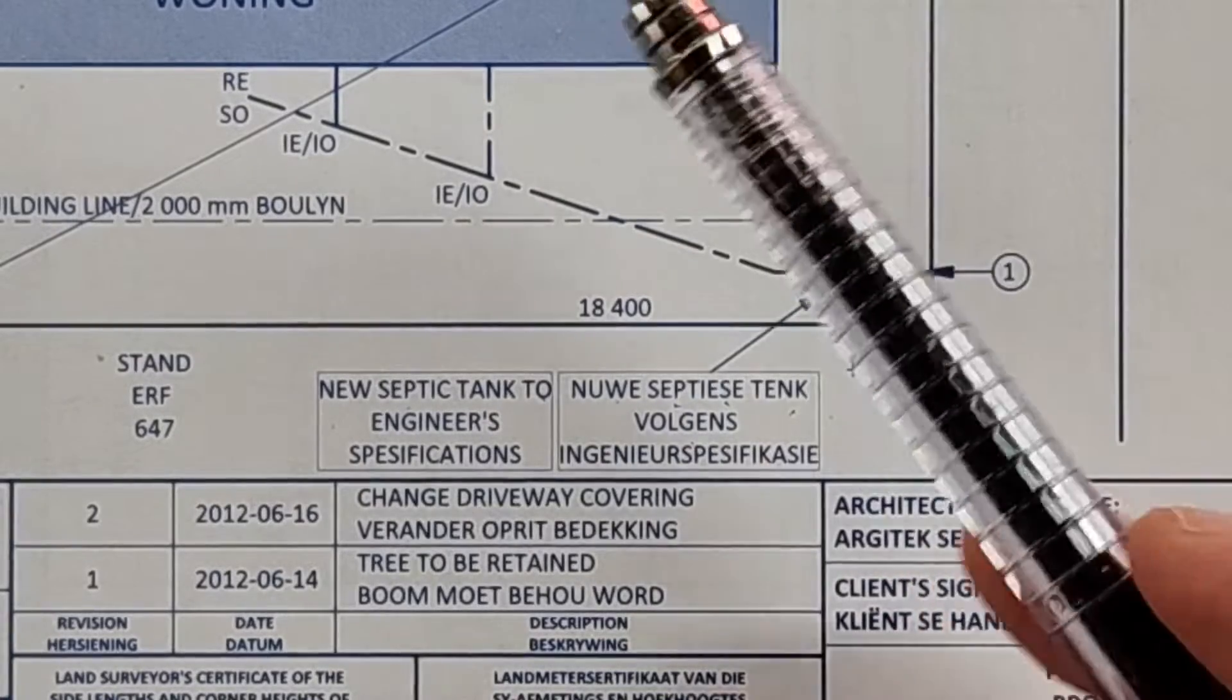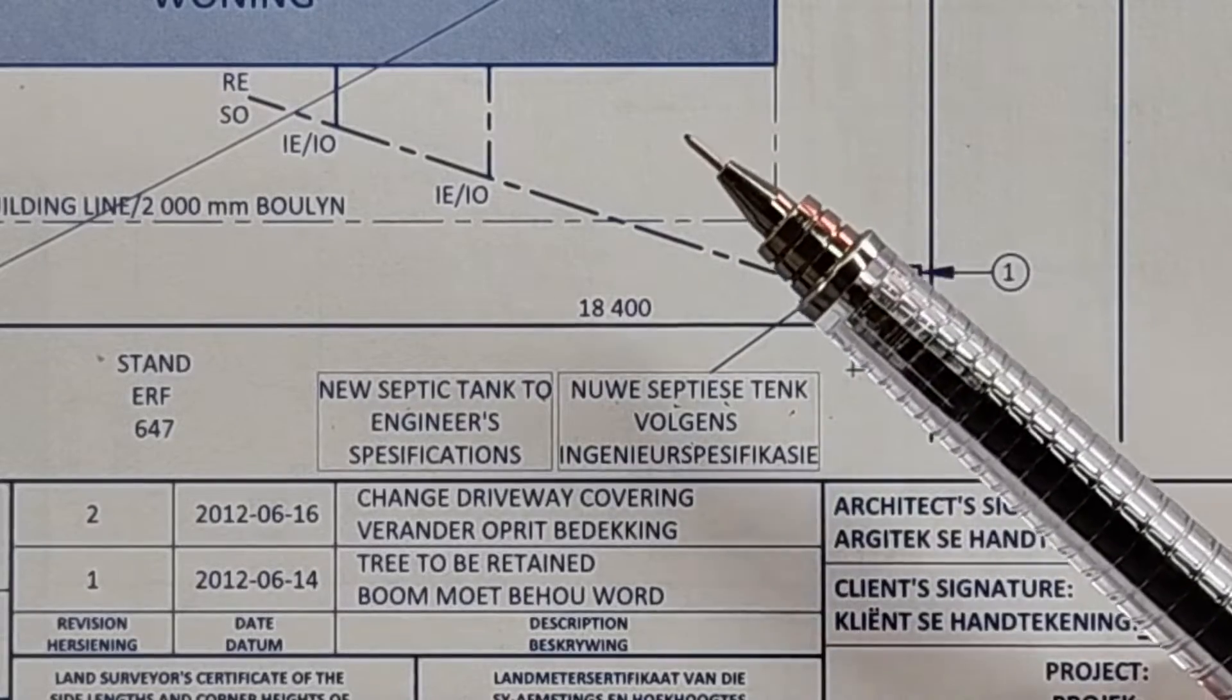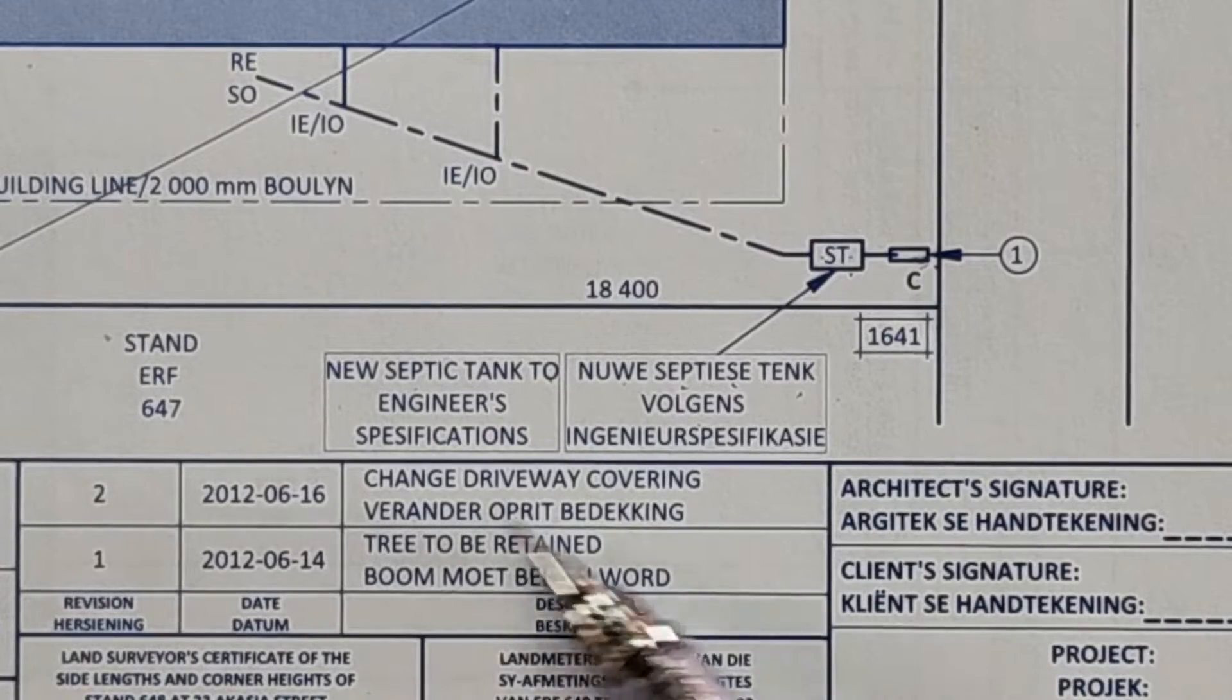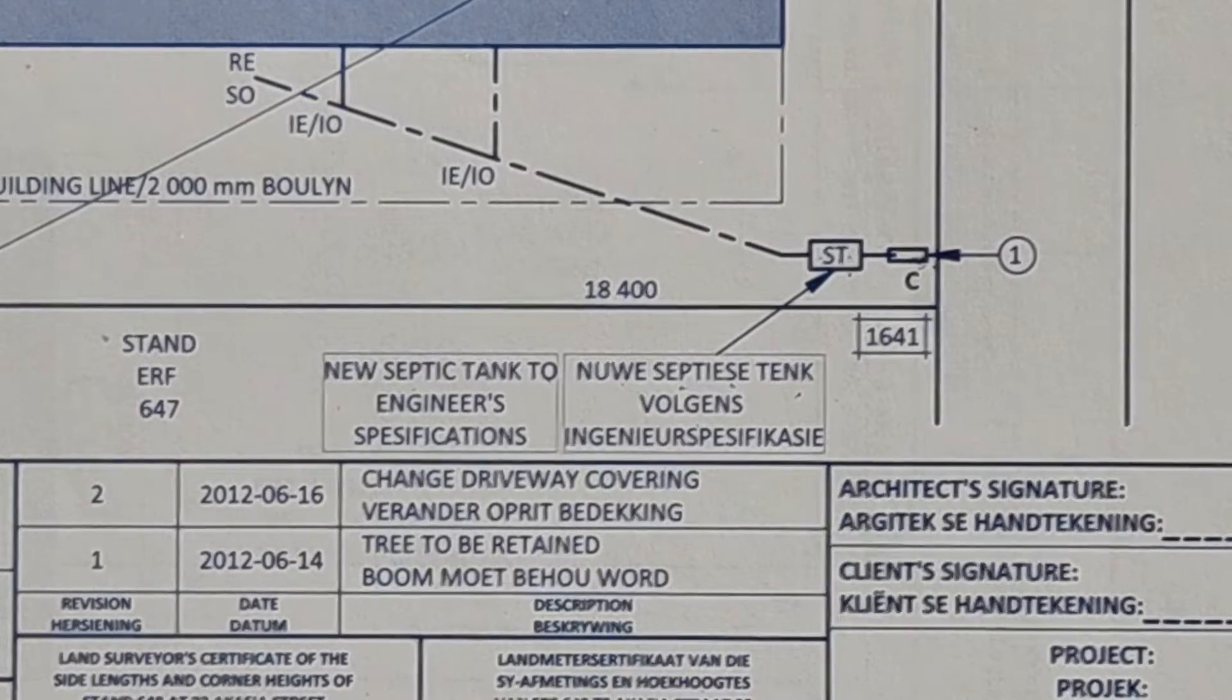Then the next question is straightforward I'd like to get to. What is the second revision that was here? Change the driveway covering, verander die oprit bedekking. And then there is again the calculations that you have to do.